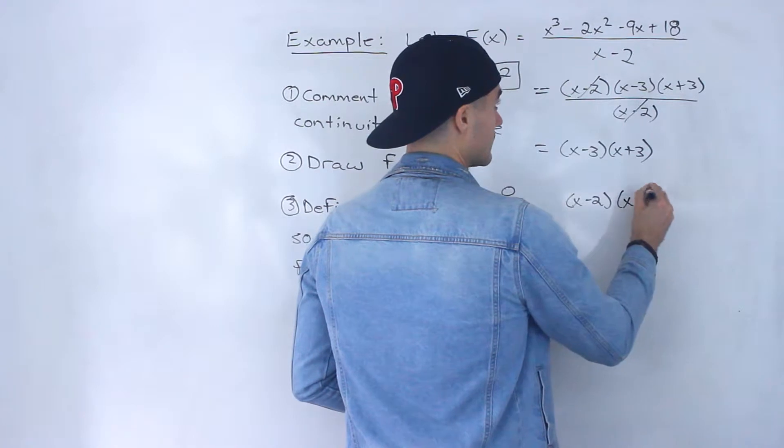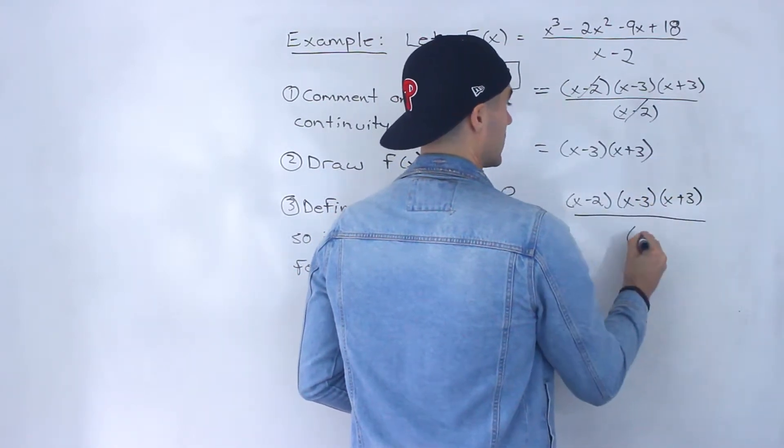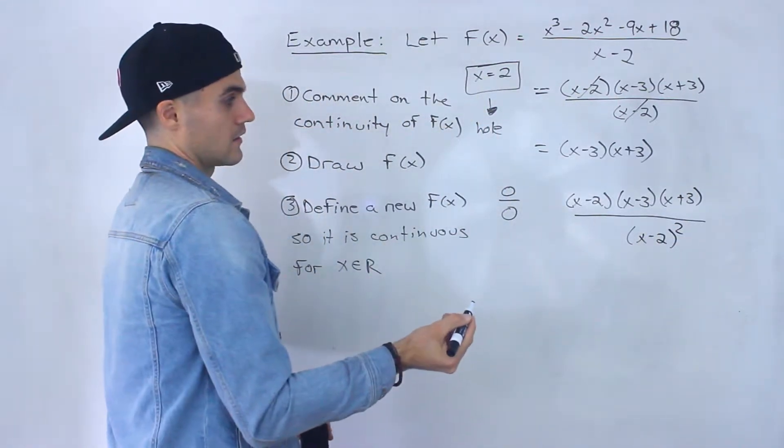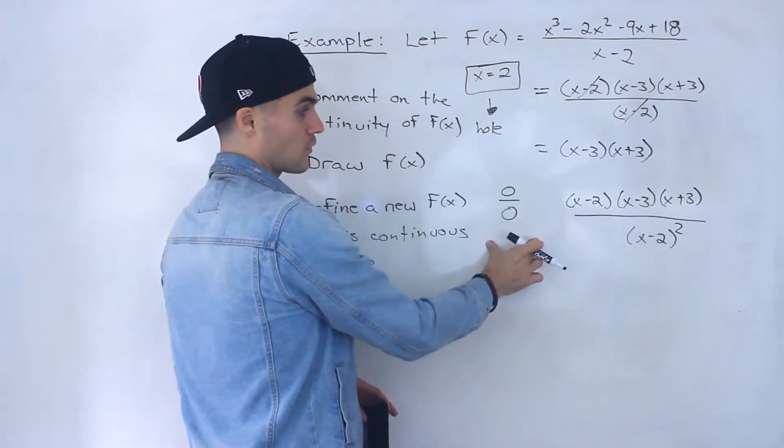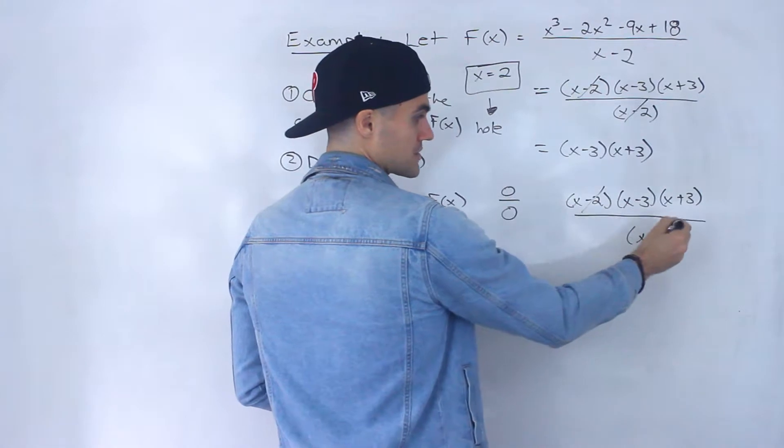like let's say we had instead a function like this, where we had x minus 2 squared here. Notice that an x value of 2, we would still have 0 over 0, we would be in this format. But in this particular case, notice that when we cancel out an x minus 2,